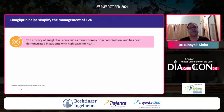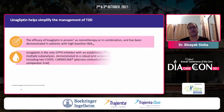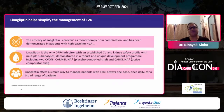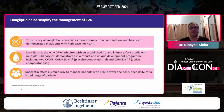Linagliptin essentially helps simplify the management of diabetes. It is efficacious not only when patients are closer to target but even when HbA1c is high. It has an established CV and kidney safety profile supported by two robust trials — one against placebo and one against a comparator. It is a once-daily drug for a broad range of patients in different settings: the elderly, those in kidney failure, those in liver failure — used safely without worry, ensuring compliance is maintained.